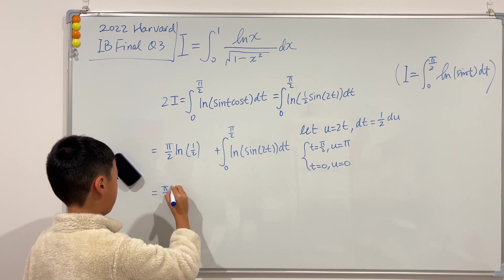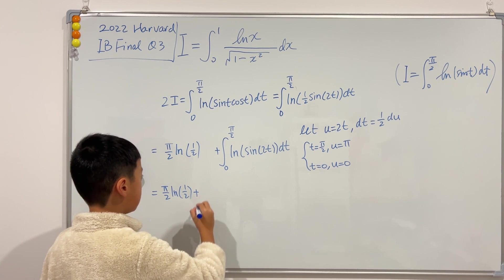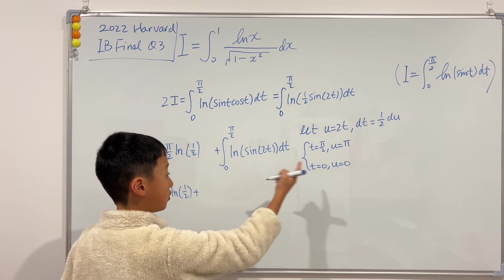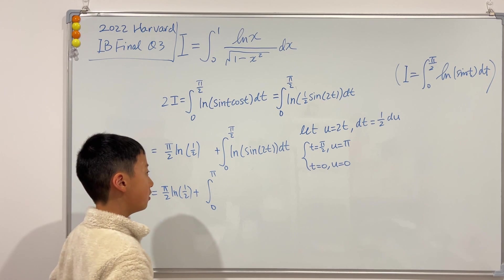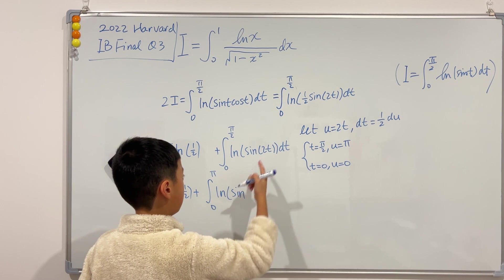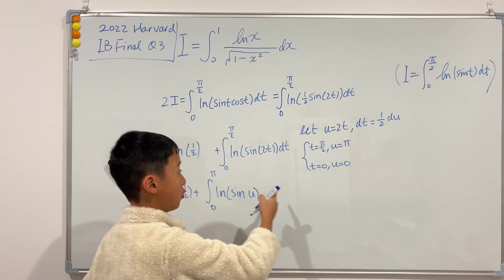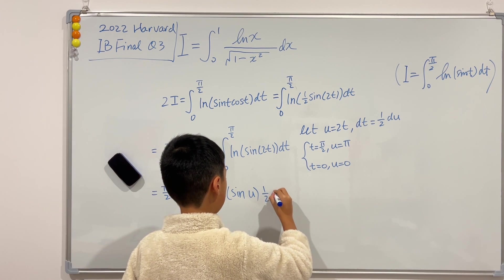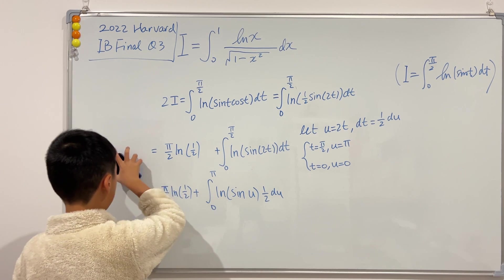So then this becomes π over 2 ln of one half, and then plus... Now it's the integral from 0 to π of what? Well, it's ln of sine 2t, which is u. Then dt, which is 1 over 2 du. And we can easily take out the 1 over 2 to the outside.